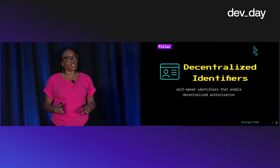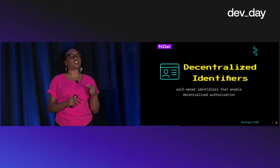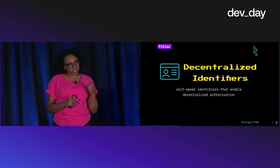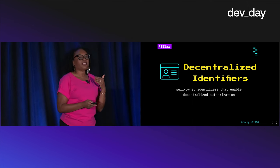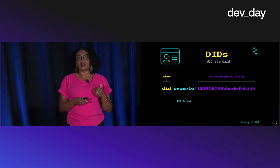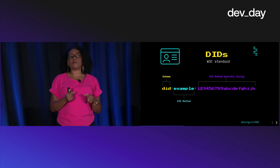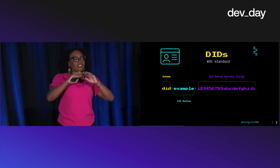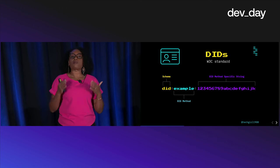So before we can realize truly decentralized applications, we first need decentralized identifiers that we own and control. Decentralized identifiers are a W3C standard and they're basically a long string of text comprised of three parts.